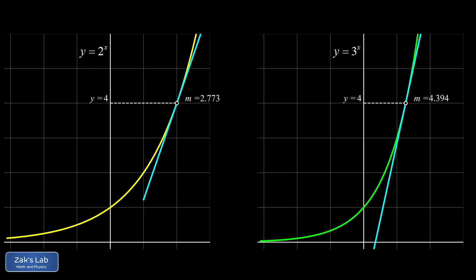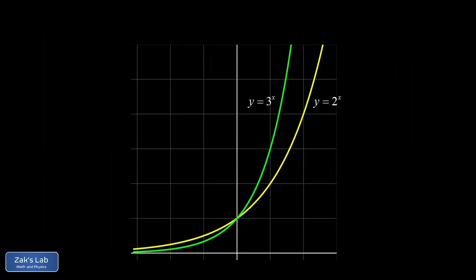And the function on the right, y equals 3 to the x, has slopes that are always a little too steep. So this begs the question, is there an exponential function with just the right base so that the slope is always exactly equal to the y-coordinate?